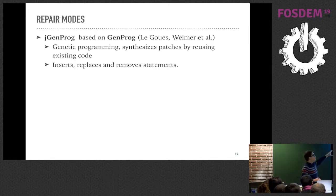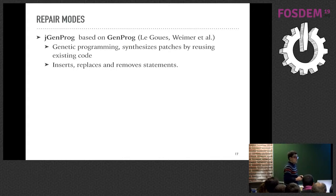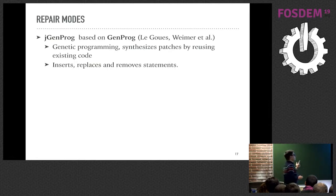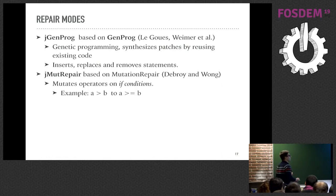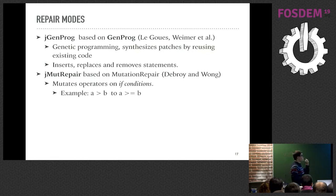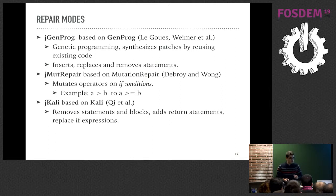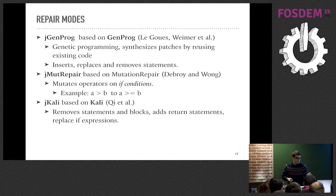The first implemented approach is jGenProg, one of the most cited papers in automatic software repair. GenProg creates patches by inserting, replacing, and removing statements — it works at the level of statements. Then jMutRepair is a simple approach that mutates operators, for instance from 'A > B' to 'A >= B'. And jKali removes code, removes statements, adds return statements, replaces if expressions, etc.